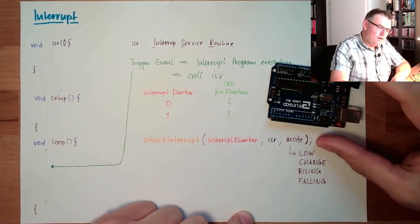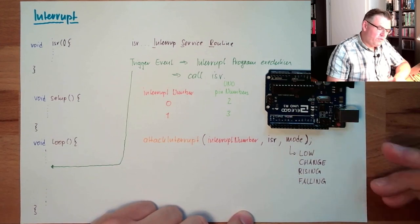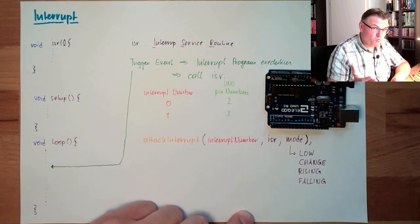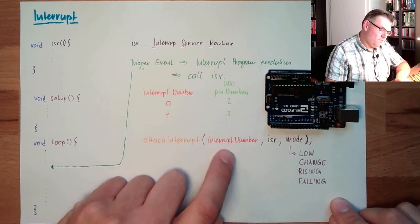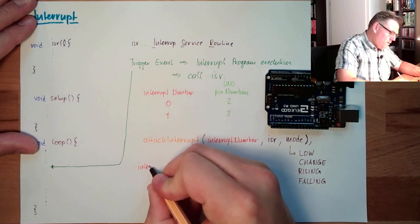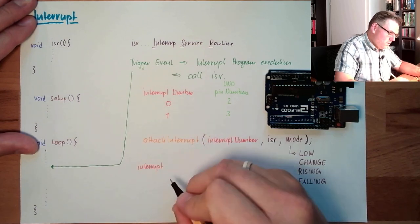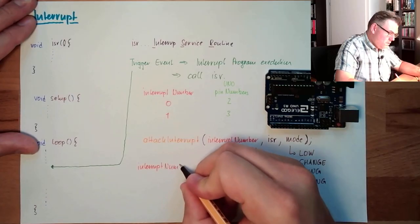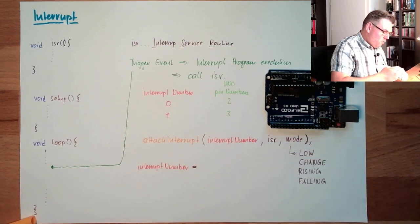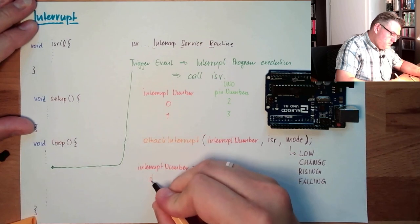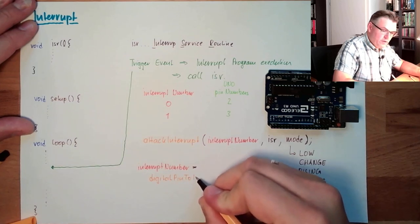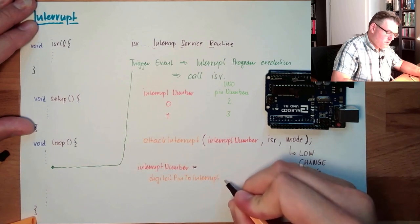If we are coding a program, it's compiling on the Uno well. Then we want to compile it for Mega, just the same program. And then this interrupt number here is false, it's wrong. This is why we usually do not write here the interrupt number. There is a tool for this. We are saying the interrupt number equals, and we can call the function digital pin to interrupt.